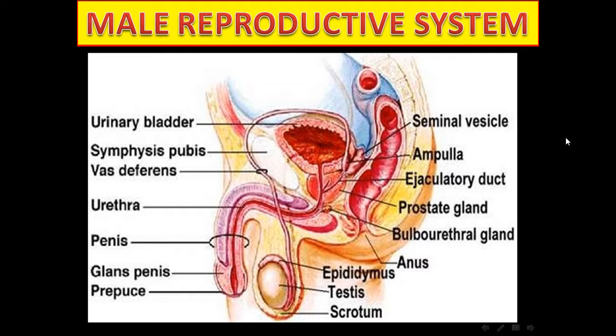Spermatozoa are produced in the testes and are carried by the duct system to the exterior. The duct system includes the epididymis, vas deferens, ejaculatory duct, and part of the urethra. Accessory glands are the seminal vesicles, prostate, and bulbo-urethral glands.